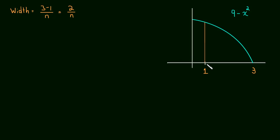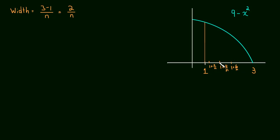Looking down here, if we start at 1, then the next x value we need to choose is 1 plus 2 over n. That makes the first rectangle have a width of 2 over n. The next rectangle starts at 1 plus 4 over n, then 1 plus 6 over n. I don't mean to confuse — the spacing shown is much bigger than the actual width would be if we use a lot of rectangles. I was just marking values.